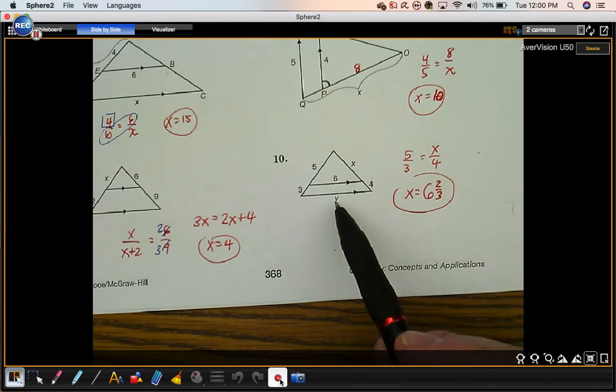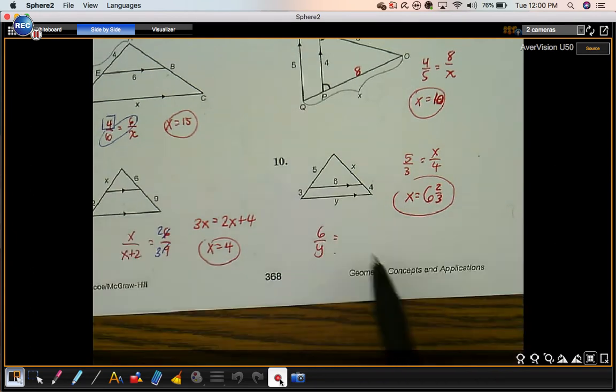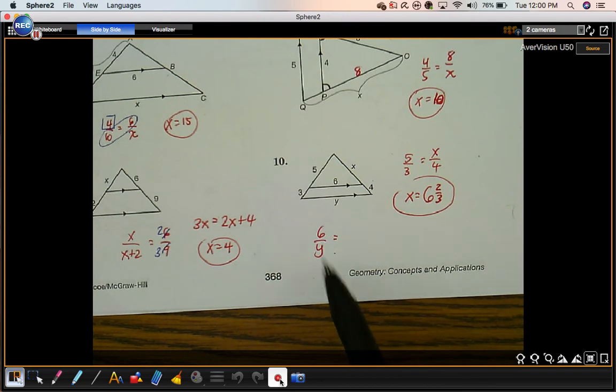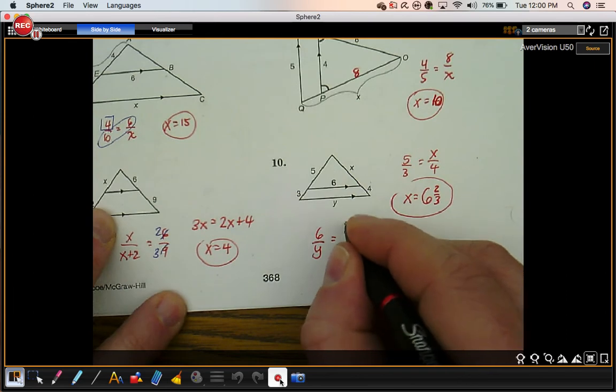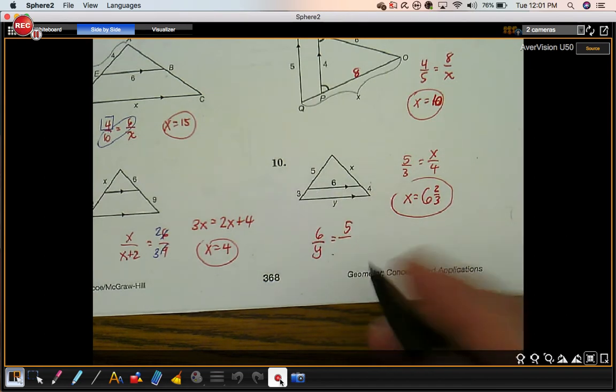We're also going to find the value of y. 6 to y. That's a ratio of the bottoms, little to big. Let's write a ratio of the left sides, little to big. 5 is the little number. 3 is not the big number. 8 is the big number, it's the entire side.